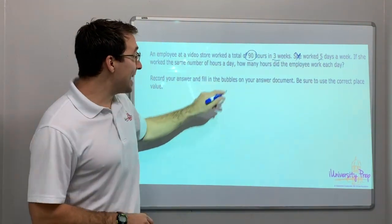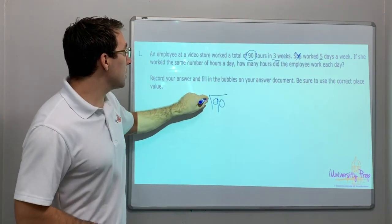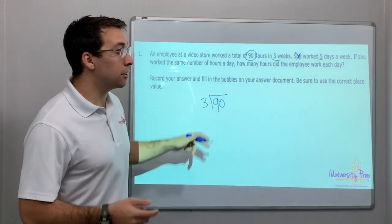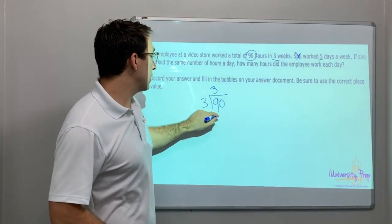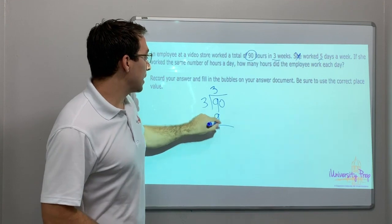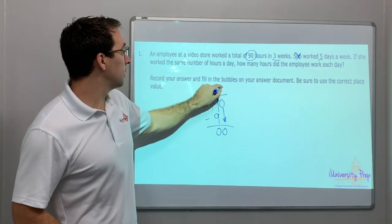So there's 90 hours total, divided by three weeks, what do you get? Nine goes into three. Three times three is nine. So three times three is nine. Subtract nine minus nine is zero. Bring down my zero. Thirty.